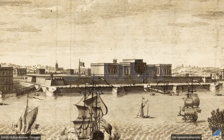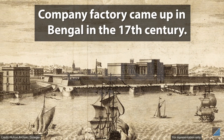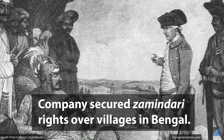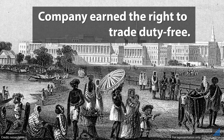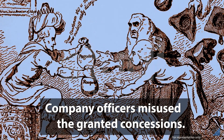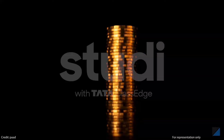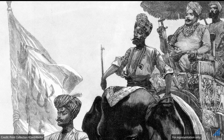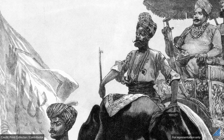By 1696, the English had set up a factory on the banks of River Hooghly and built a fort around the property. Two years later, they secured Zamindari rights over three villages and persuaded Mughal Emperor Aurangzeb to grant them the right to trade duty-free. But some of the company officers misused these concessions by carrying out their personal trade under the guise of company business. This caused a huge revenue loss for the Nawab of Bengal.